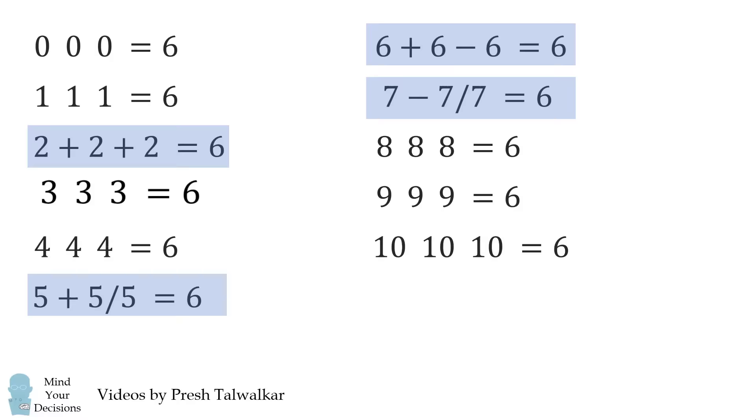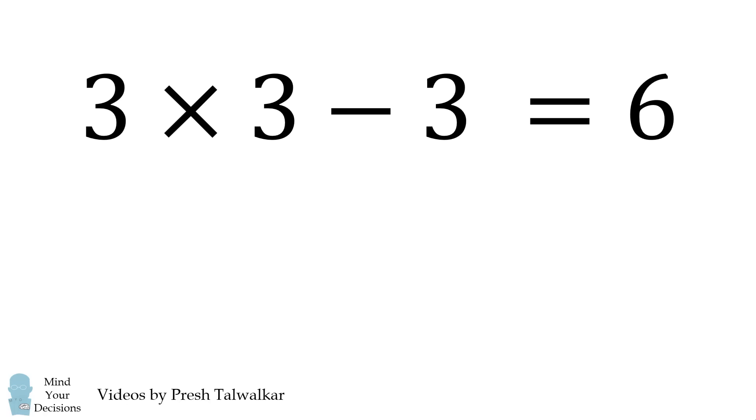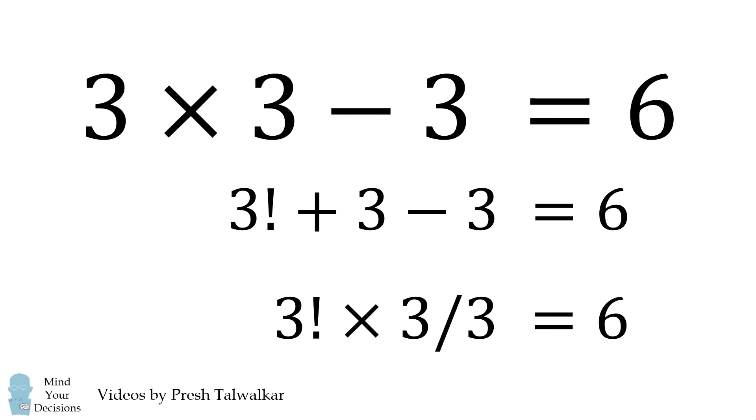Now, let's solve 3 3 3 is equal to 6. One way to solve this is 3 times 3 minus 3 is equal to 6. But there are actually several more solutions for this. Another one is 3 factorial plus 3 minus 3 is equal to 6. We can also do 3 factorial times 3 over 3 is equal to 6.